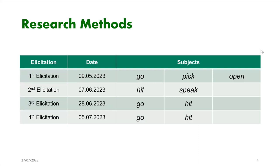For the elicitation, in the first session I focused on three basic verbs: go, pick, and open. Because I had no direction at the beginning, after collecting around 30 sentences I had no idea what I was doing. In the second elicitation I tried other verbs to see what I could find, and I found 'go' and 'hit' had some interesting things. So I decided to focus only on these two verbs in the next two sessions. In this presentation I will not talk about other verbs, only go and hit.